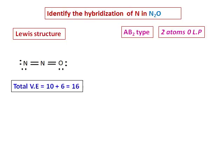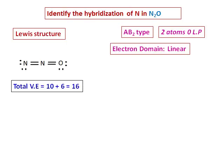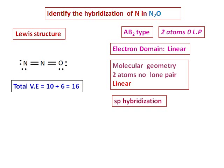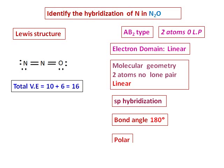The electron domain geometry is linear, and since there is no lone pair, the molecular geometry is also linear. Nitrogen in N2O is sp hybridized, with a bond angle of 180 degrees. The molecule is polar because the central atom has different atoms attached to it.